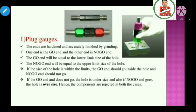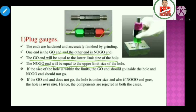One is the go end and the other is the no-go end. The go end will be equal to the lower limit size of the hole. The no-go end will be equal to the upper limit — the maximum limit — of the hole. If the size of the hole is within limit, the go end should go inside the hole and the no-go end should not go.